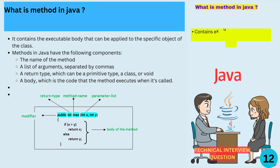Can you explain what a method is in Java and give an example? Methods in Java have the following components: the name of the method, a list of arguments separated by commas, a return type which can be a primitive type, a class, or void, and a body which is the code that the method executes when it's called. With all those components, we can build a method that performs a particular task, like adding two numbers or printing a message.